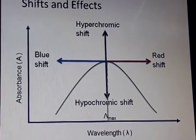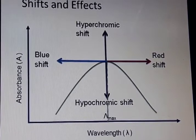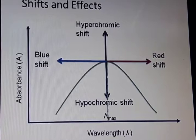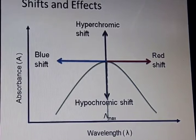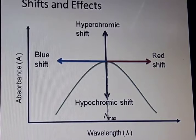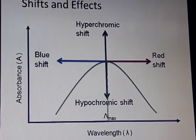In this diagram you can see: as the wavelength is increasing or shifting, the shift is called red shift. When wavelength is decreasing, this shift is called blue shift. Due to high intensity, it is called hyperchromic shift. And if intensity decreases or absorbance decreases, then it is called hypochromic shift.